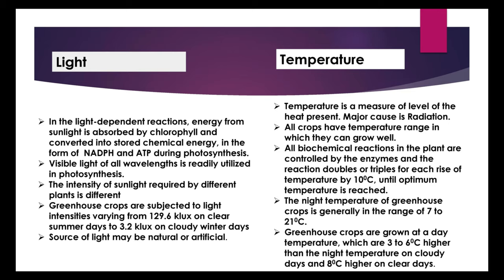Greenhouse crops are subjected to light intensities varying from 129.6 lux on clear summer days to 3.2 lux on cloudy winter days. The source of light may be natural or artificial.